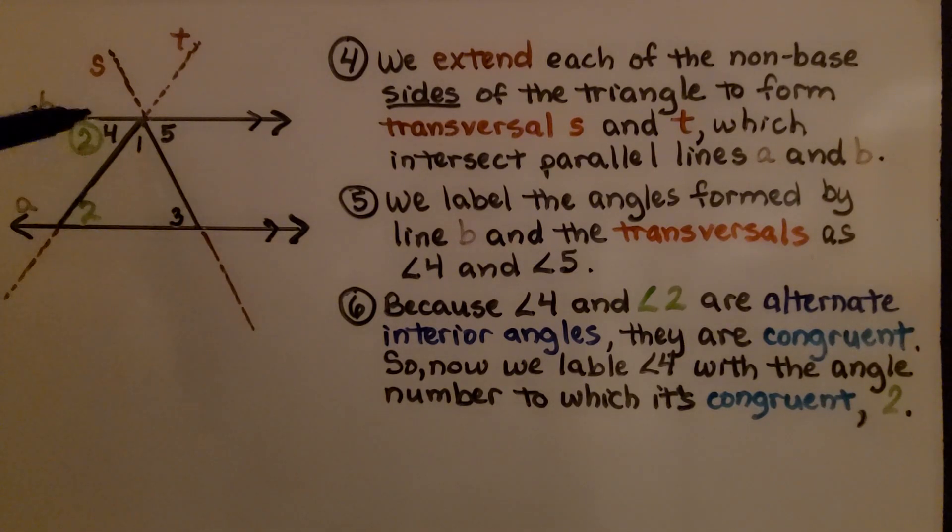Now because angle 4 and angle 2 are alternate interior angles, they're congruent. So now we label angle 4 with the angle number to which it's congruent, 2.